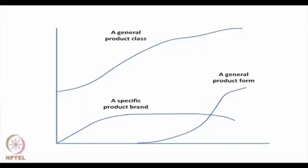The diagram drawn earlier represents a specific product brand. But there can be a situation where a general product class continues for much longer. For example, TVs in general will not decline so fast — TVs as a means of mass communication will continue for long. But a specific brand like Konark TV may show a rise, get matured, fall and some other brand come in its place.